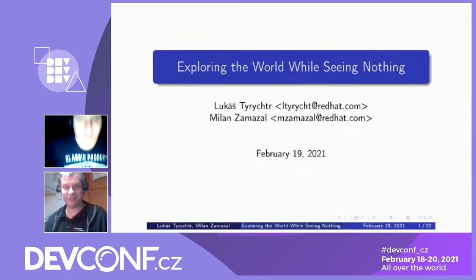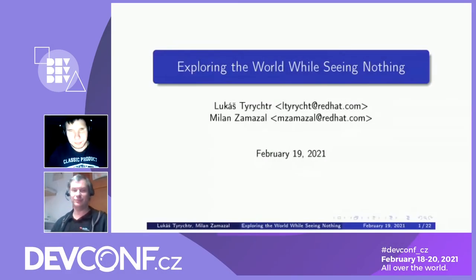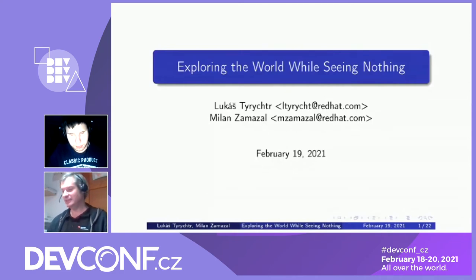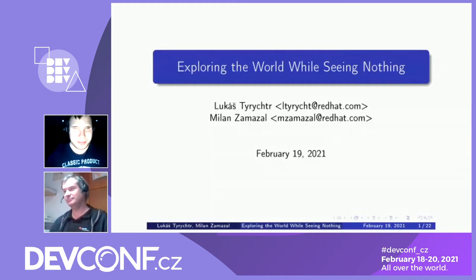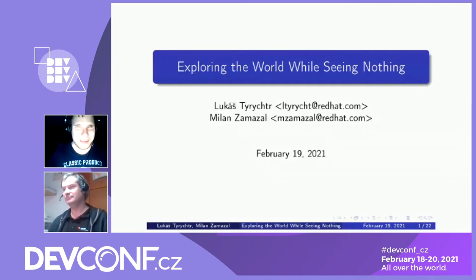Hello, welcome to our presentation about accessibility of computers for visually impaired users, with a special focus on using maps. Let us introduce ourselves. My name is Milan Zamazal. I work as a senior software engineer at Red Hat and my sight is all right. Hello, everyone. My name is Lukáš. I'm just finishing my master's degree at Masaryk University and I'm also doing an internship at Red Hat. And what about my sight? Well, I can see nothing.